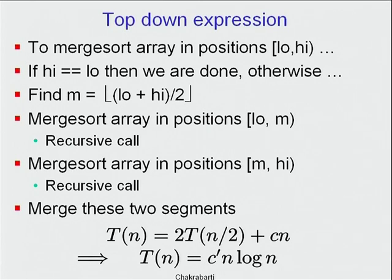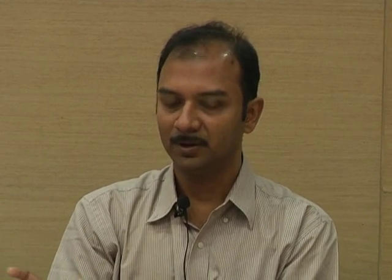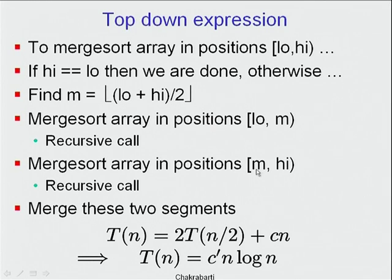Then merge sort the arrays in positions low through m and m through high. Unlike binary search where one half is excluded, here we have to really solve both half problems — sort both the left half and the right half. These are two recursive calls. Once those calls return and the two half arrays are sorted, we can merge those two segments, and we know how to merge already.